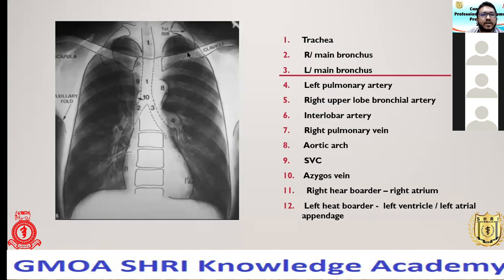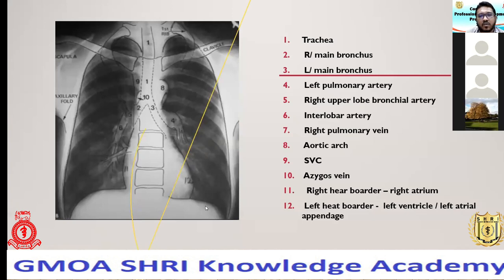You can also identify both scapulae, clavicles, and all the ribs. In a good inspiratory PA film, at least six anterior ribs and ten posterior ribs should be visible above the diaphragm. For rotation assessment, check the distance from each medial clavicle end to the spinous processes — if equidistant, it's a well-positioned, non-rotated film.